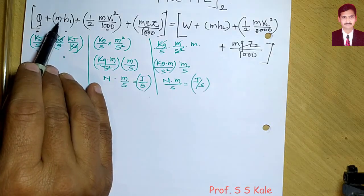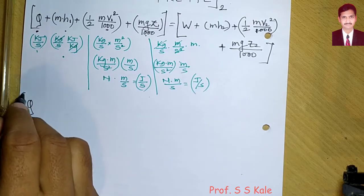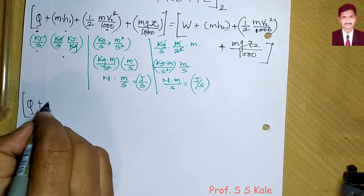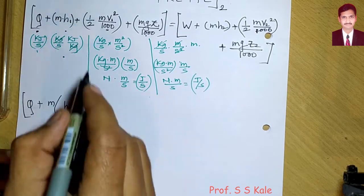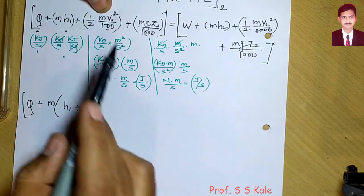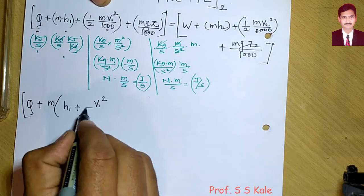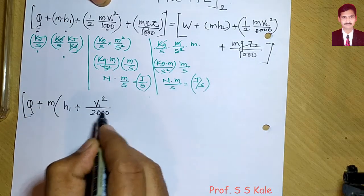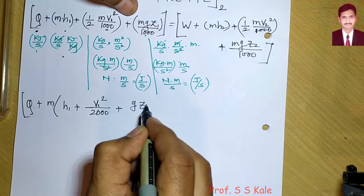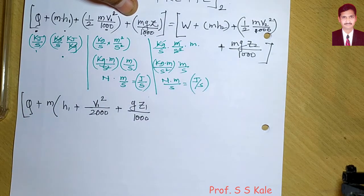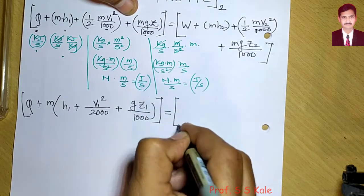Now simplify by taking mass m as common. The equation becomes: Q + m·(h1 + V1²/2000 + g·z1/1000) = W + m·(h2 + V2²/2000 + g·z2/1000). Here the factor of 2 combines with 1000 to give 2000.